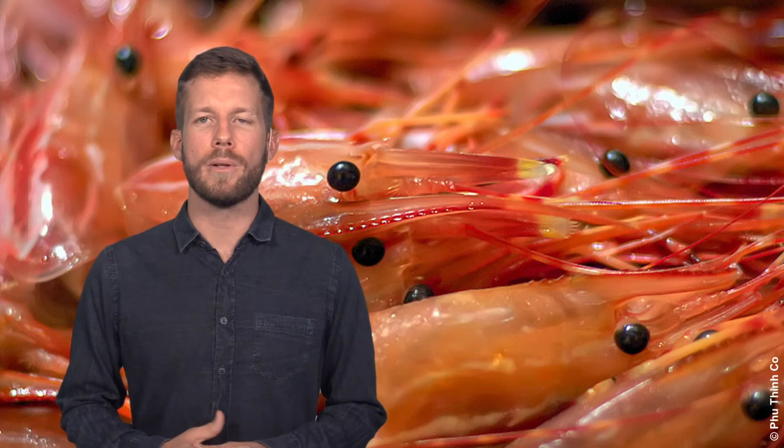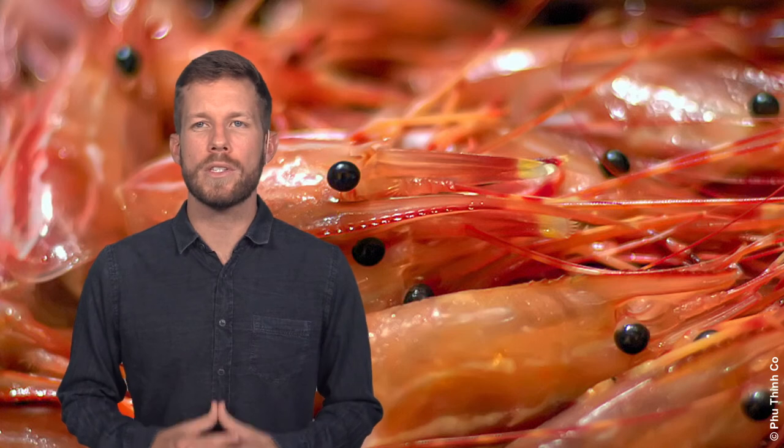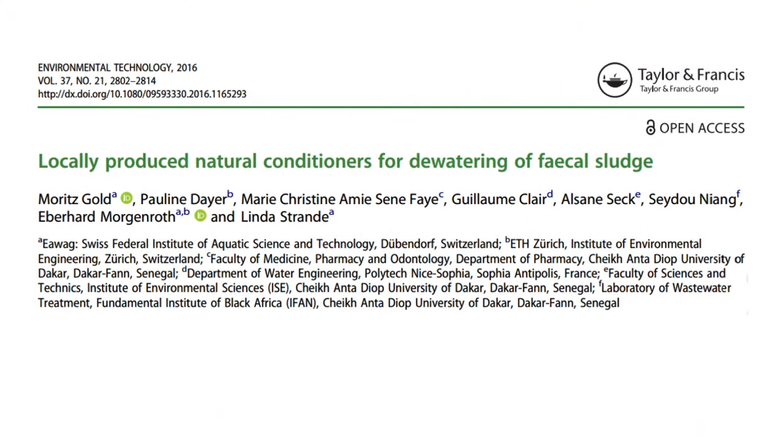Next to the treatment performance, we also looked at the feasibility of these conditioners to be produced locally. In Dakar, insufficient quantities of Moringa oleifera seeds for conditioning of fecal sludge at the treatment plants were available. In contrast, it appears that sufficient quantities of shrimp waste could be sourced for the production of Kaitosan as a conditioner. This study can also be downloaded for no charge from our website.